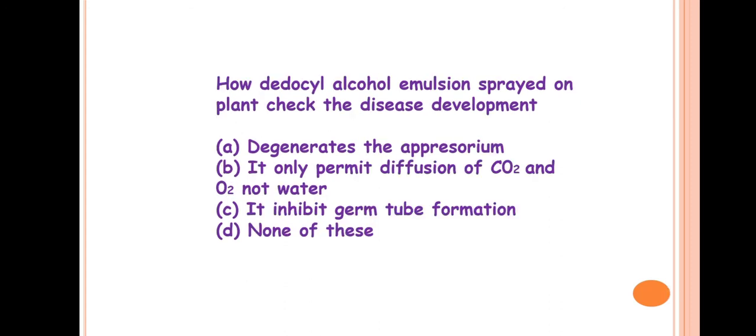Next question is: how does dodecyl alcohol emulsion sprayed on plant check the disease development? So the answer is B, it only permits diffusion of carbon dioxide and oxygen but not water. This dodecyl alcohol is also used as anti-transpirant because it is not permitting the diffusion of water. And as it is not permitting water diffusion, in turn it also inhibits spore germination, because water is a must for spore germination. The main mechanism behind the application of dodecyl alcohol to check disease development is it inhibits spore germination by not permitting the diffusion of water molecules.